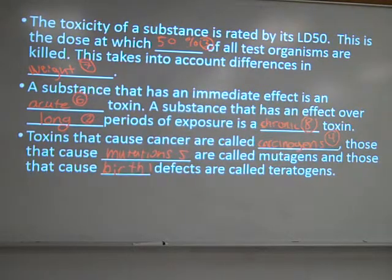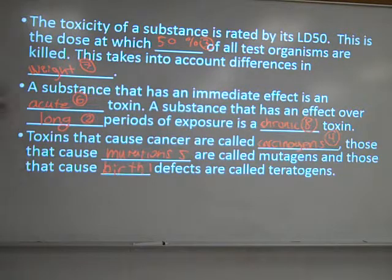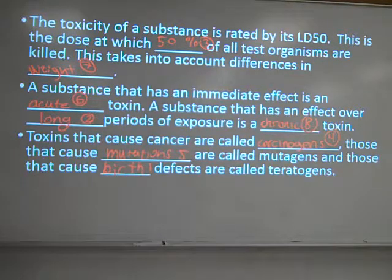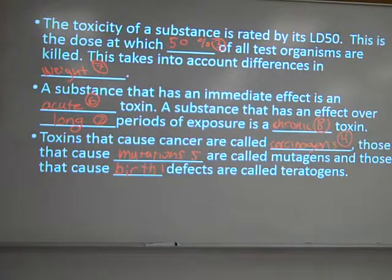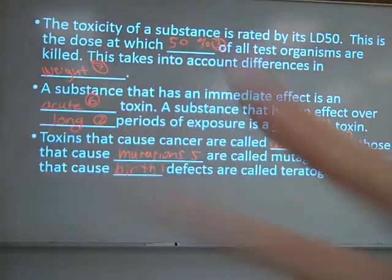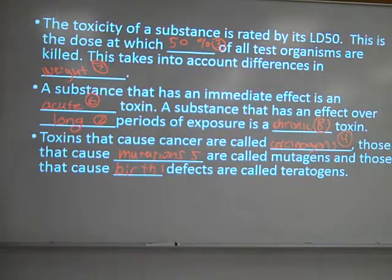A couple of things about toxins. There are certain things that they use in toxicology, which is the science of toxins — a very complex science that deals with a lot of things. One of them is establishing the strength of a toxin, and the typical way to do that is to give it what they call an LD50 rating.